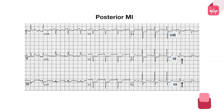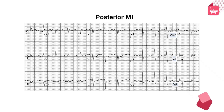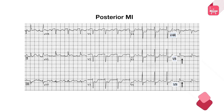This ECG with significant ST depression from V1 to V3 may not seem like a STEMI at first. However, just as posterior wall MI gives rise to dominant R waves in anterior leads instead of Q waves, an isolated posterior wall MI can give mirror-image ST depressions in V1 to V3. Using additional posterior leads V7 to V9 reveals ST elevation in V8 and V9 — confirming this is actually a posterior wall STEMI.